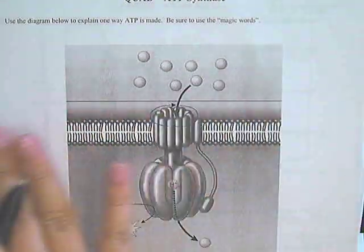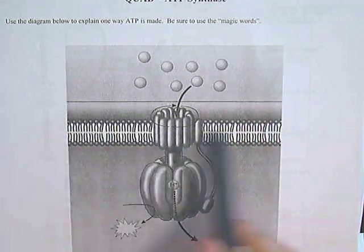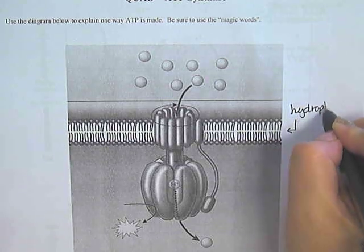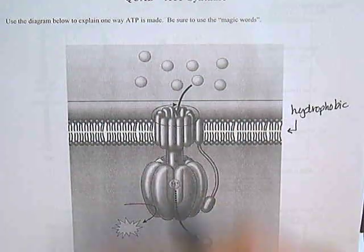So what you do see in this diagram is the phospholipid bilayer. Remember that the tails are hydrophobic, and that's going to prevent charged or polar molecules from freely crossing the membrane.